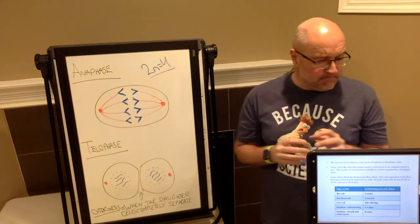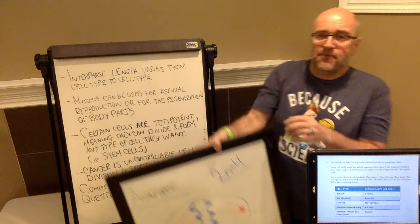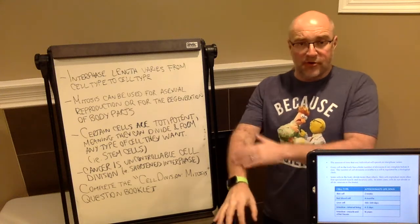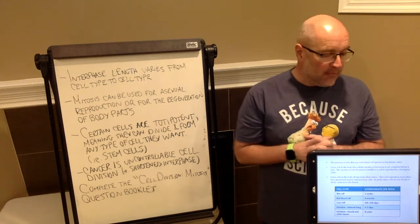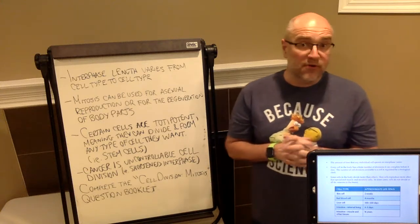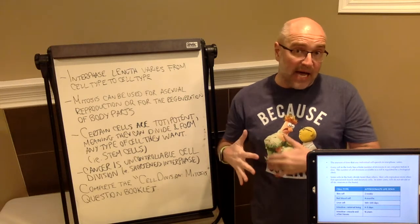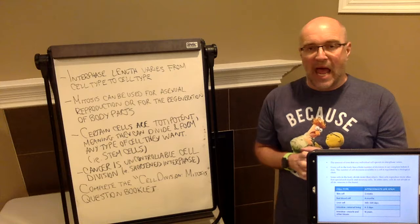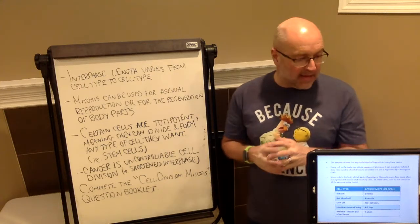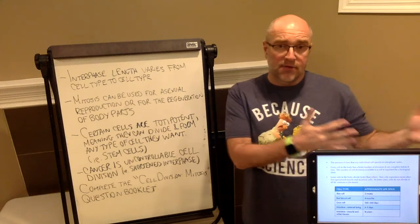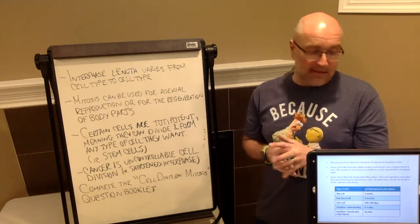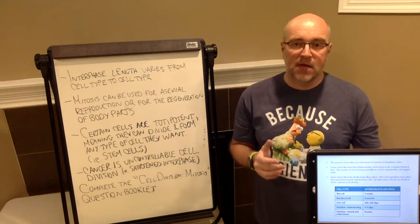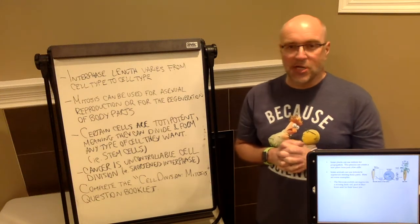A couple of last things before we finish up today. Cells, different cells are going to spend different amounts of time in interphase. So different types of cells in your body have different lifespans. For example, skin cells last about two weeks. Red blood cells, only four months. Liver cells can live for over a year. Intestinal cells on the inside, where the microvilli are, only four to five days. And then other tissues that are right beside those cells on the very inside of your intestine, the ones that are on the outside can have a lifespan of up to 16 years before they divide.